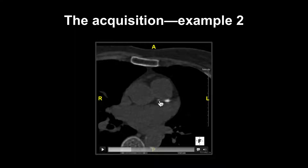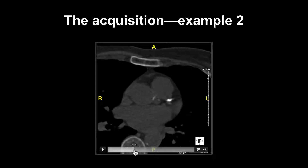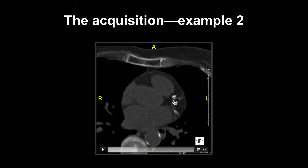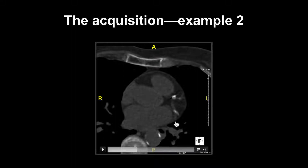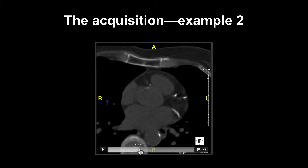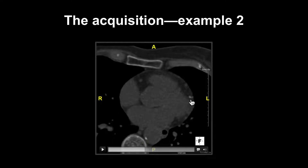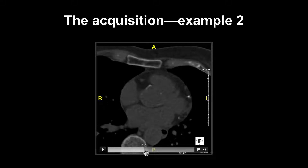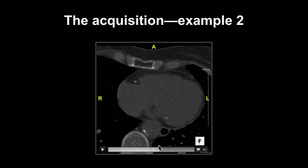Here we can see the calcification in the left main stem and also the proximal LAD segment. As we scroll down through the imaging set, we can see further coronary artery calcium in the proximal to mid LAD segment and also within the left circumflex artery. If we scroll down further, we can see calcification in the first diagonal branch and also within the mid-segment of the right coronary artery.